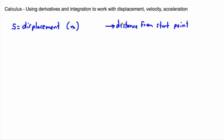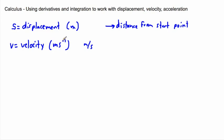Displacement is measured in units of meters. We also have velocity, v — velocity and speed are essentially the same except one is a vector and one is a scalar. Velocity is measured in meters per second. Sometimes you'll see it written as m·s⁻¹ because a negative exponent means it's on the bottom, so it's meters per second — a compact notation. Then we have acceleration, a, measured in meters per second squared.